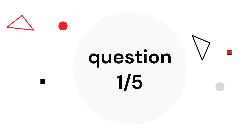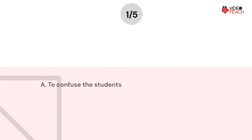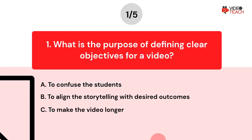Question number one. What is the purpose of defining clear objectives for a video? Option A: To confuse the students. Option B: To align the storytelling with desired outcomes. Option C: To make the video longer.